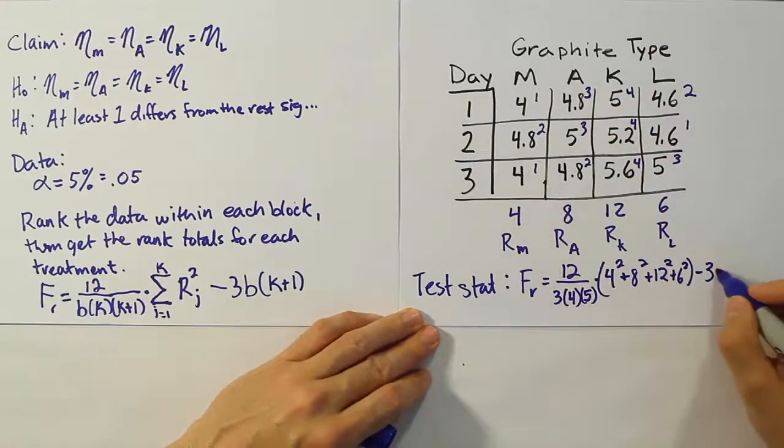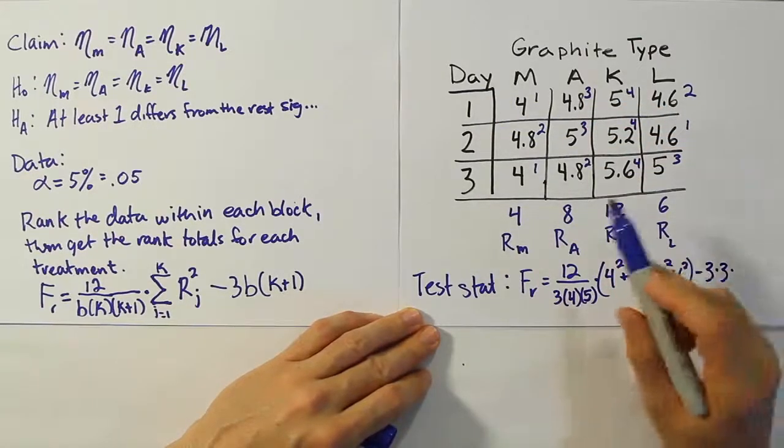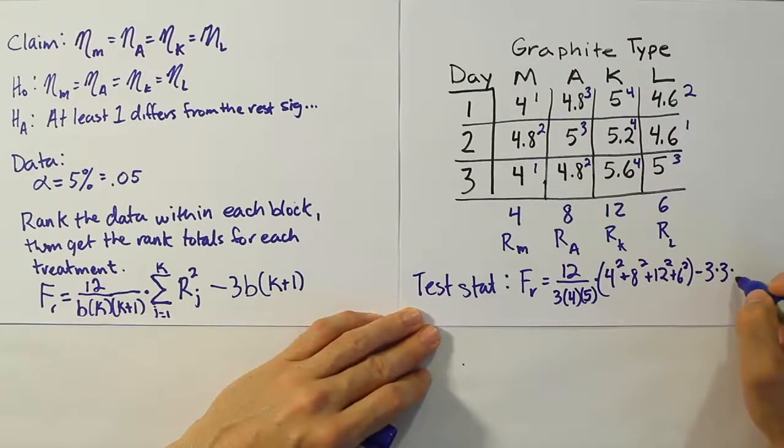Those are all the rank totals quantity squared. Then minus three times the blocks, the number of blocks, one, two, three, times k plus one. k is four, plus one would be five, of course.